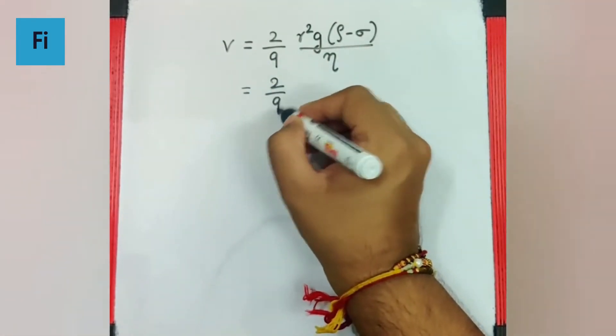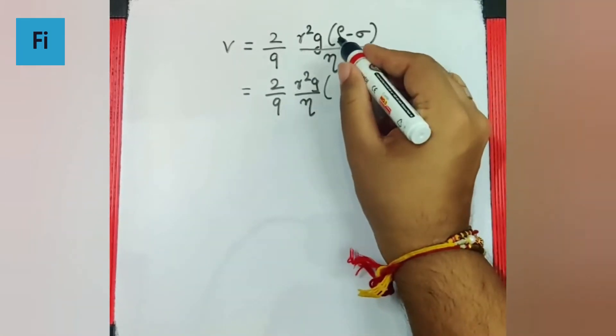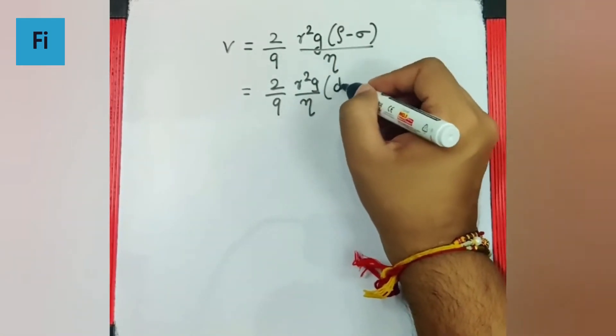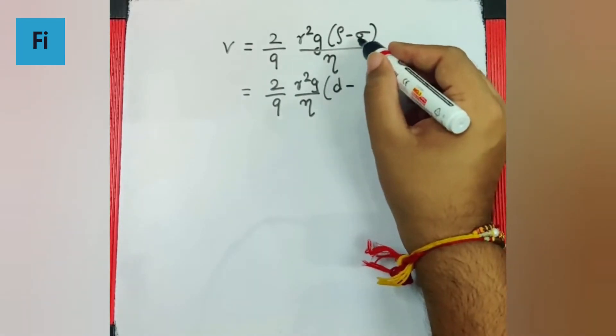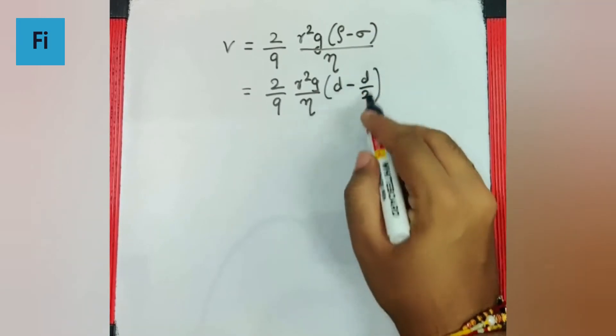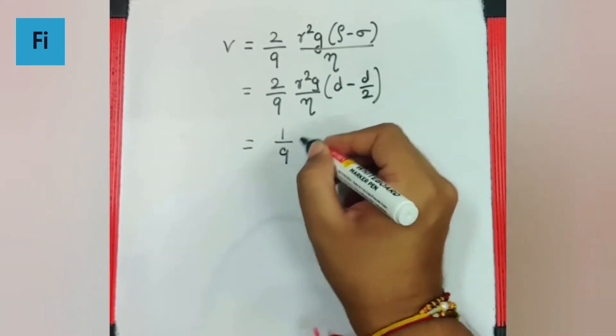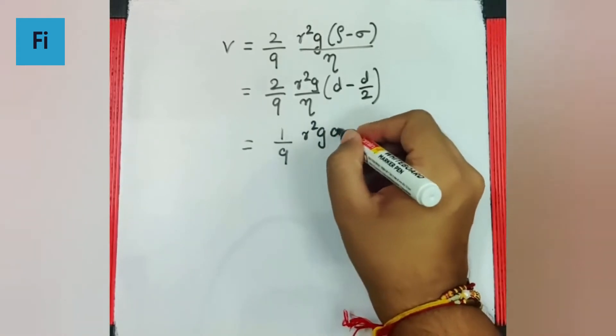Here 2 by 9 R square G by eta, but rho is the density of the ball which is d, sigma is the density of the surrounding which is glycerin over here that makes it d by 2. So d minus d by 2 is d by 2, that makes it 1 by 9 R square G d by eta. That is the terminal velocity.